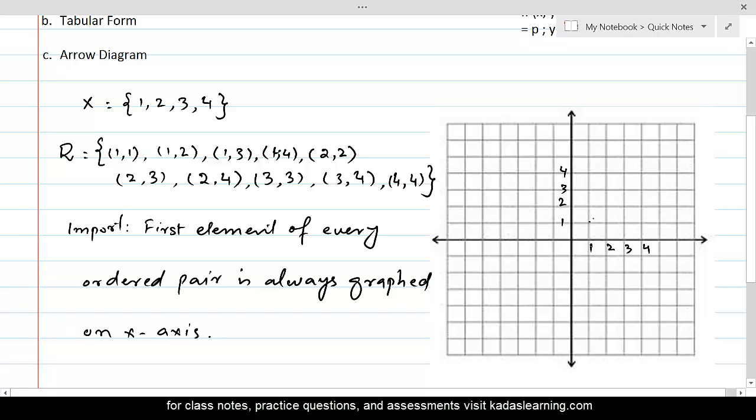And then (1,2) is right here. And then (1,3) is right here. And then (1,4) is right here. Next, (2,2) would be here. And then (2,3), and then (2,4). And then (3,3), this is (3,3).